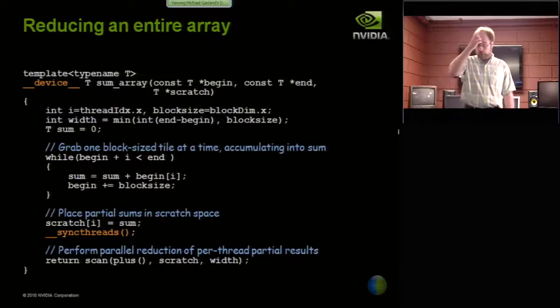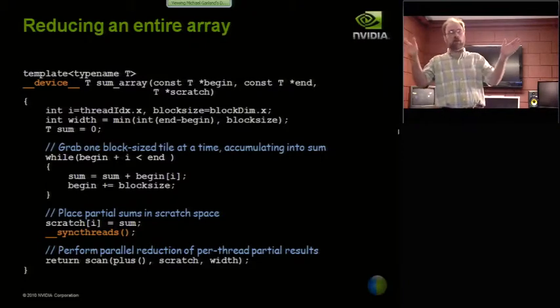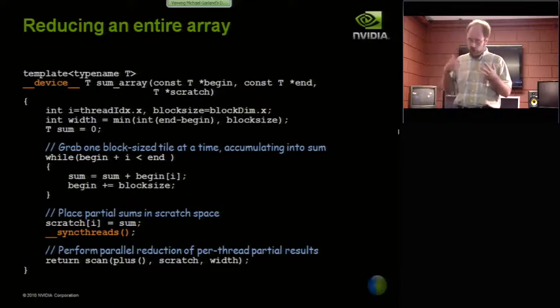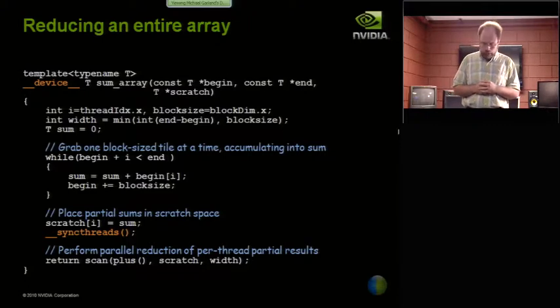First of all, I need a kernel that's going to, for a single thread block, sum up some arbitrary number of elements. And I'm calling that piece of code this sum array code. And again, you don't need to pore over this right now. You can look at it later, but fundamentally, the strategy it's using is this.